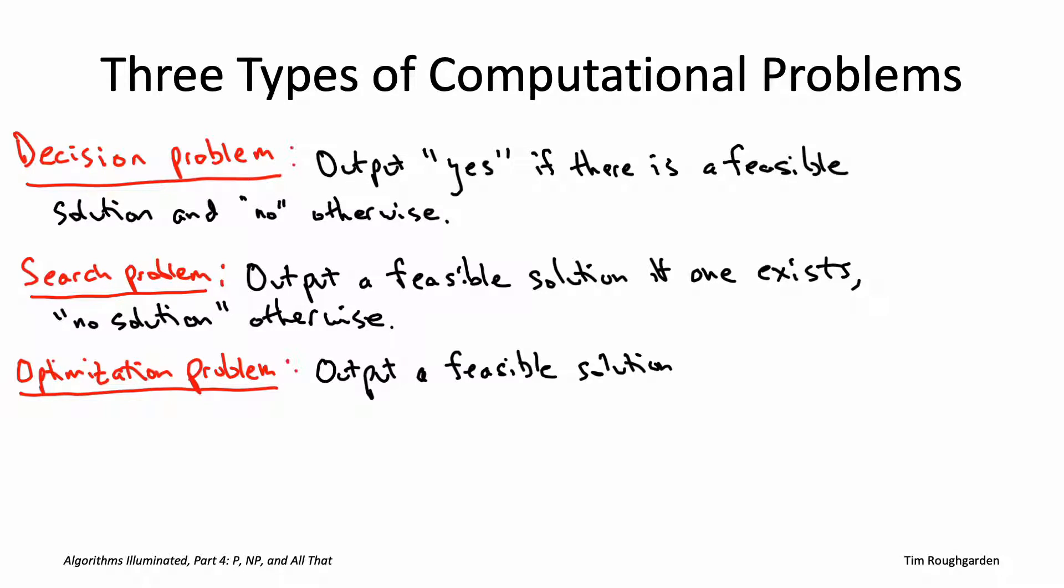In an optimization problem, you also specify an objective function to be maximized or minimized, and an algorithm needs to, among all feasible solutions, return one with the best possible objective function value. Or if there are no feasible solutions, the algorithm should correctly report that fact.